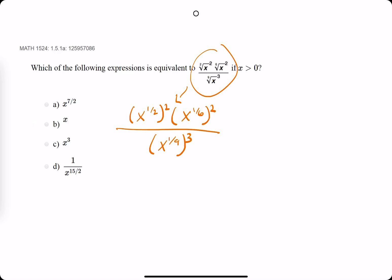This is equivalent to x to the one-half to the second is x to the first, because we multiply one-half and two. x to the one-sixth squared is x to the one-third. One-ninth times three is three-ninths, or one-third, so we get x to the one-third here.